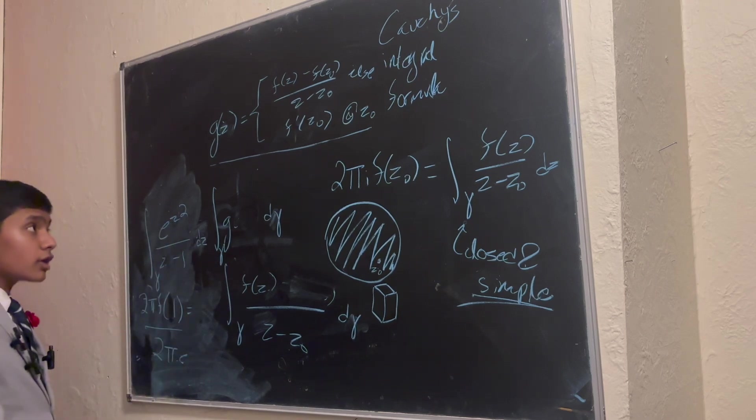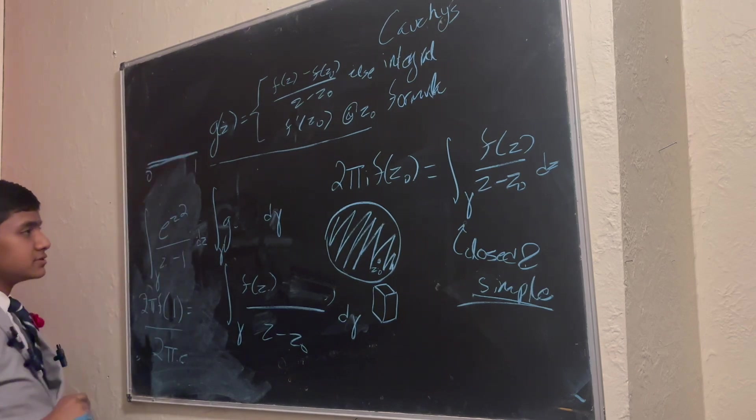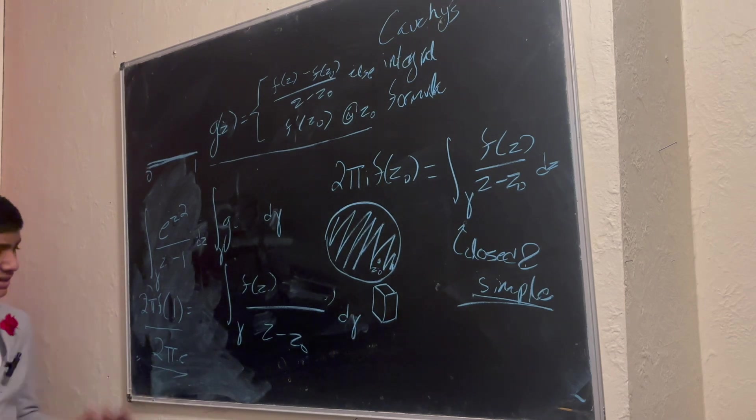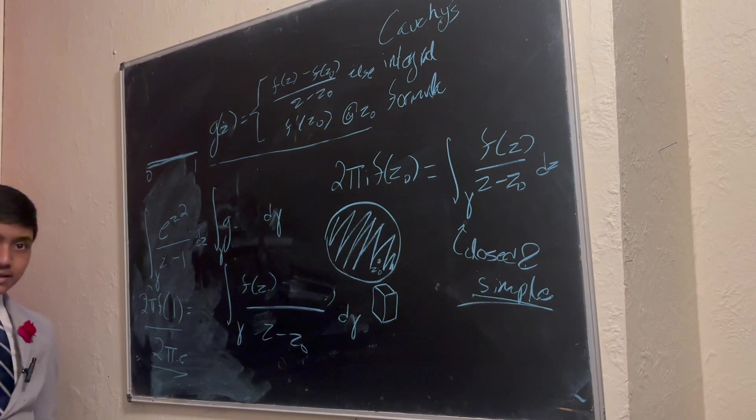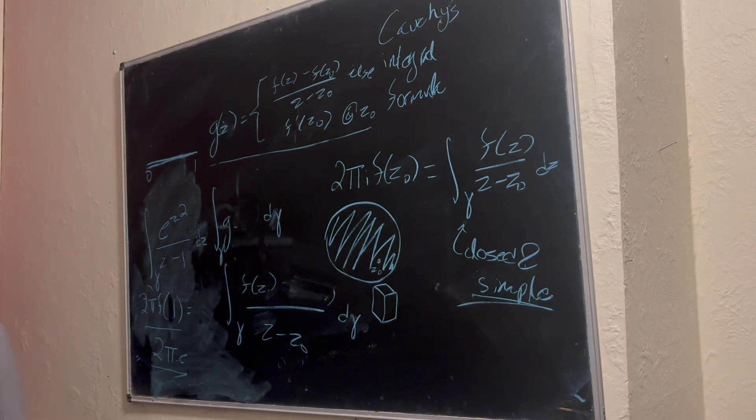For any closed contour, including one that just goes forth and back and gives you 0 to 1, this function is just 2 pi i e to the minus 1. The integral of this is 2 pi i e to the minus 1. That's how simple it was, all along. That's how powerful the Cauchy integral formula is.